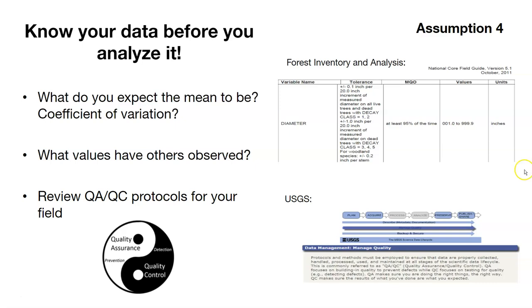As one example, in the Forest Inventory Analysis data set, their minimum quality for many variables is that they measure—say, tree diameter—correctly at least 95% of the time. That is, they want to be within plus or minus 0.1 inches for every 20 inches of increment measured on all live and dead trees. That's one example of a specific measurement. In doing this, you should be able to understand and review the quality assurance and quality control protocols for your field. It's really important to understand data quality before you start analyzing it and performing regressions. Thank you.